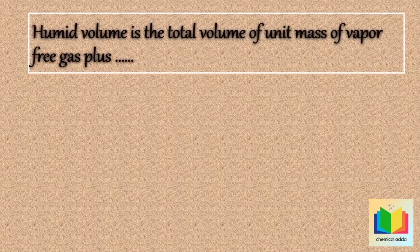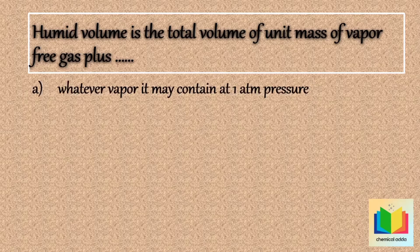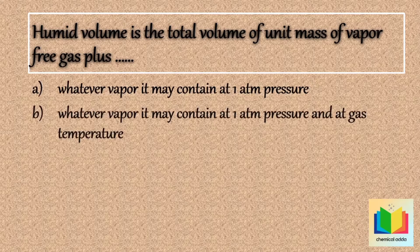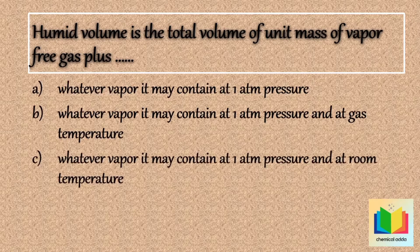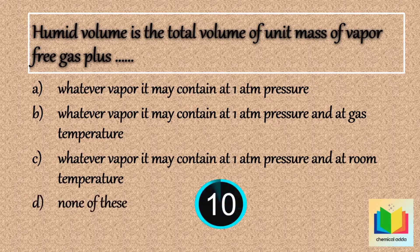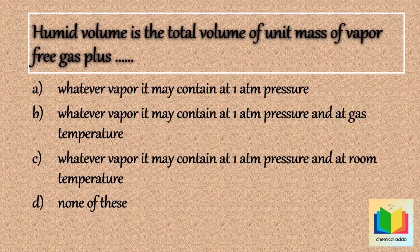Next question: humid volume is the total volume of a unit mass of vapor-free gas plus — option A: whatever vapor it may contain at one atmosphere pressure, option B: whatever vapor it may contain at one atmosphere pressure and at gas temperature, option C: whatever vapor it may contain at one atmosphere pressure and at room temperature, option D: none of these. The answer is option A: whatever vapor it may contain at one atmosphere pressure.